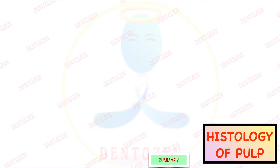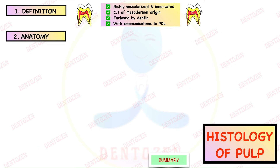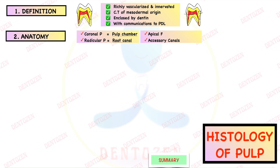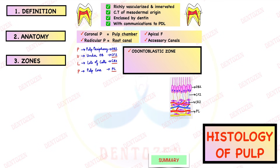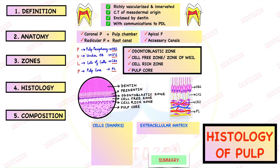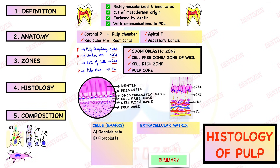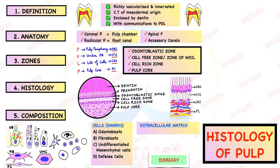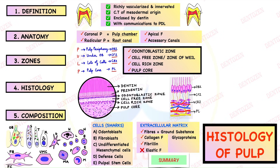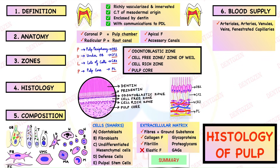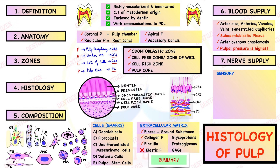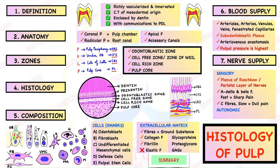In summary, histology of pulp covers: definition; anatomy including coronal pulp, radicular pulp, apical foramen and accessory canals; zones of the pulp — odontoblastic zone, cell-free zone (zone of Weil), cell-rich zone and pulp core; the histology diagram; composition including five cell types (odontoblasts with three stages, fibroblasts/fibrocytes, undifferentiated mesenchymal cells, defense cells, pulpal stem cells) and extracellular matrix (fibers and ground substance); blood supply with fenestrated capillaries, subodontoblastic plexus, arteriovenous anastomosis and highest pulpal pressure; and nerve supply with plexus of Raschkow made of A-delta/beta and C fibers, plus autonomic fibers regulating blood flow.